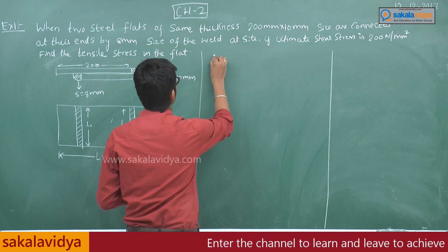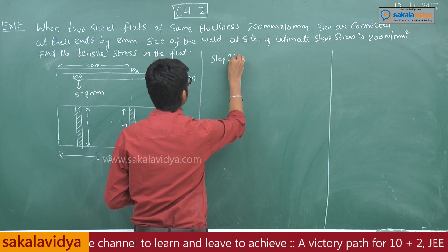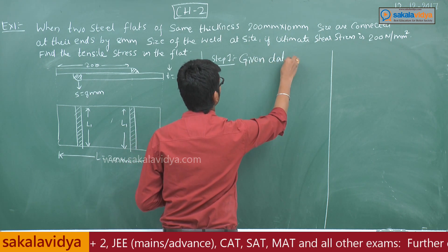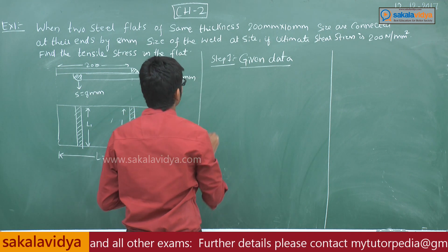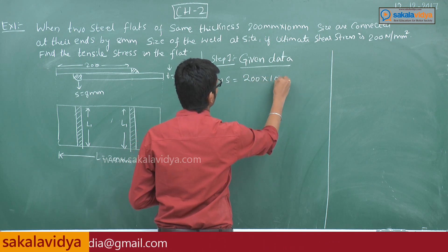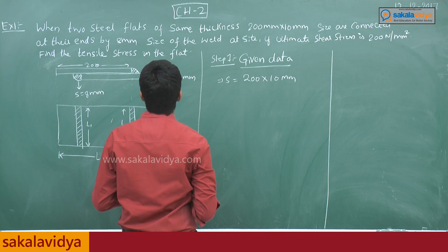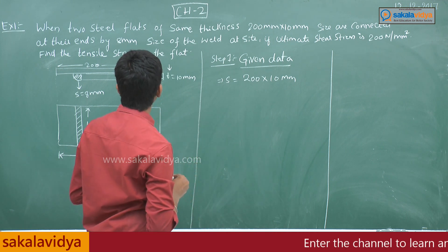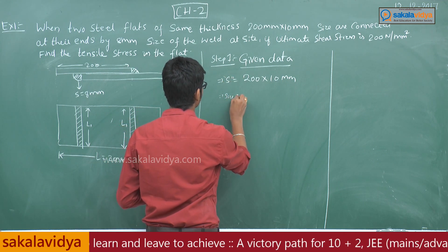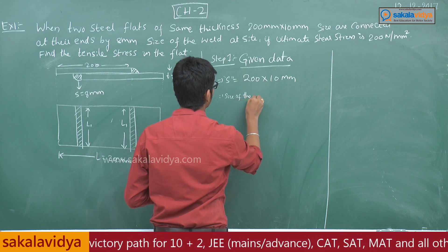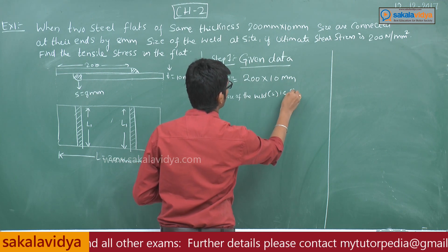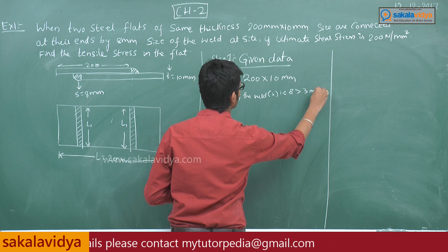Step 1 — Given data: Size of the plates is 200 × 10mm. The size of the weld, small s, is 8mm. Since 8mm is greater than 3mm, it is valid.